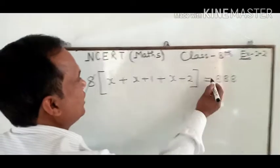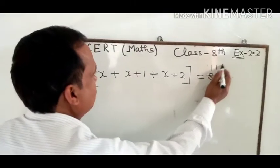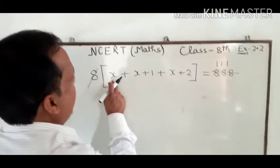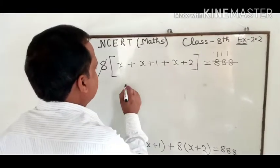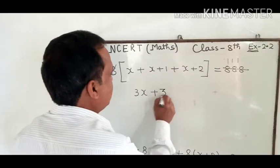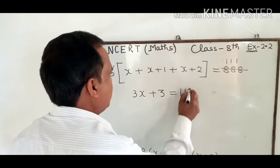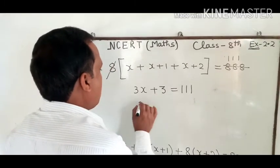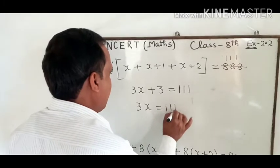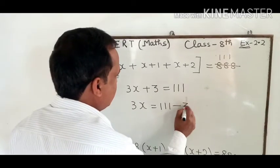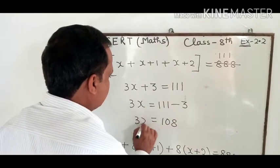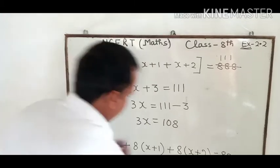We divide by 8. Now here we get x plus x plus x, this is 3x, plus 1 plus 2 is 3, equals 111. Now 3x is equal to 111 minus 3. This is 108.